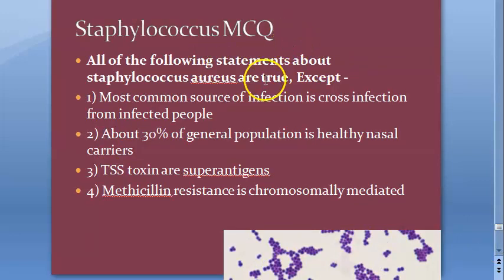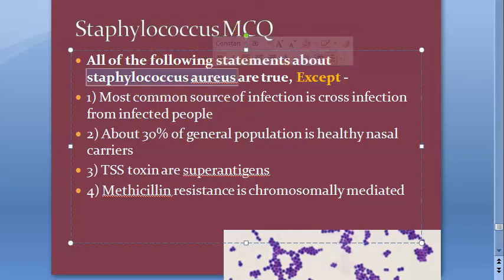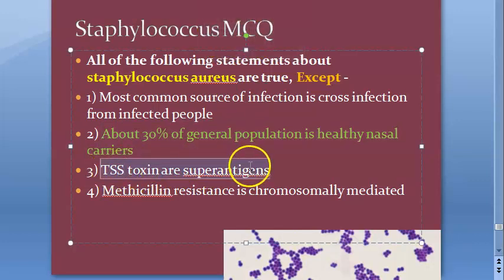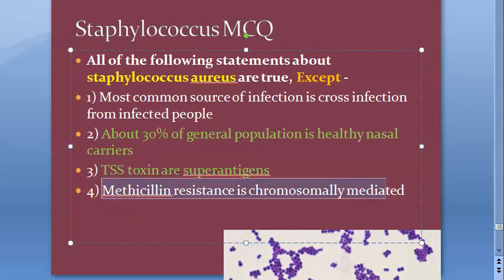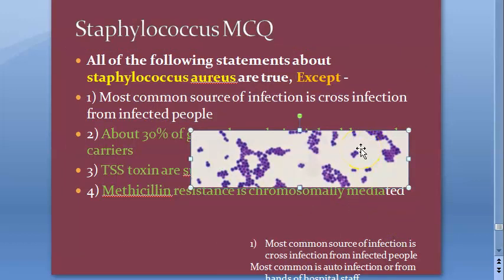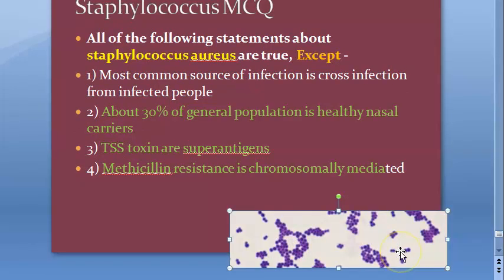All of the following statements about staphylococcus aureus are true except. Options: most common source of infection is cross infection from infected people; about 30% of general population are healthy nasal carriers; TSS toxins are super antigens; methicillin resistance is chromosomally mediated. The instructor notes there is some confusion — sources may be auto-infection from themselves or from hospital staff.